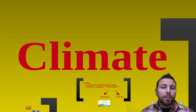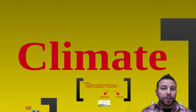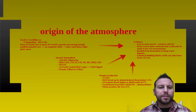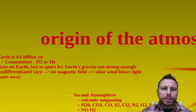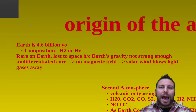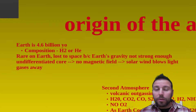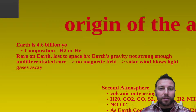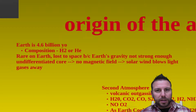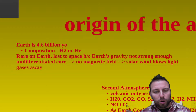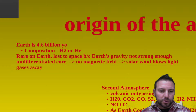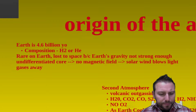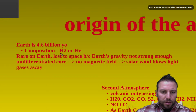In order to understand our climate, we need to know where Earth's atmosphere started out. We need to look back about 4.6 billion years ago to figure out what was happening on Earth at that time. As the Earth was forming, we had a very different planet than what we have now. Most of the composition of the atmosphere at that time was hydrogen and helium.